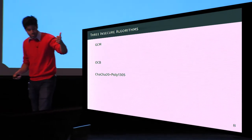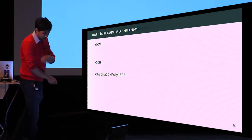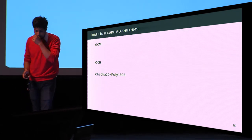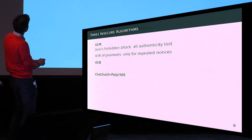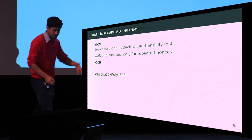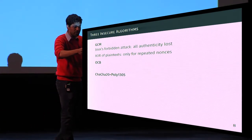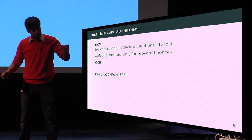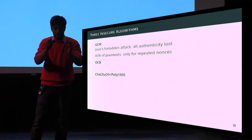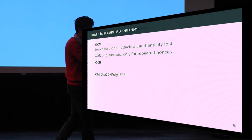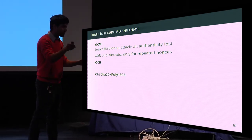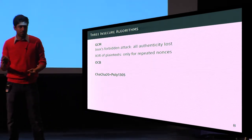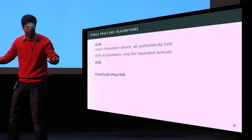To understand what can go wrong in practice, consider three algorithms: GCM, OCB, and ChaCha20-Poly1305. All three are insecure in the nonce-misuse setting, but behave very differently under attack. For GCM, Joux's forbidden attack means that repeating one nonce allows a partial key recovery — all authenticity is lost for every nonce. Confidentiality is lost only for repeated nonces — you can recover the XOR of plaintexts encrypted under the same nonce, but not plaintexts under other nonces.